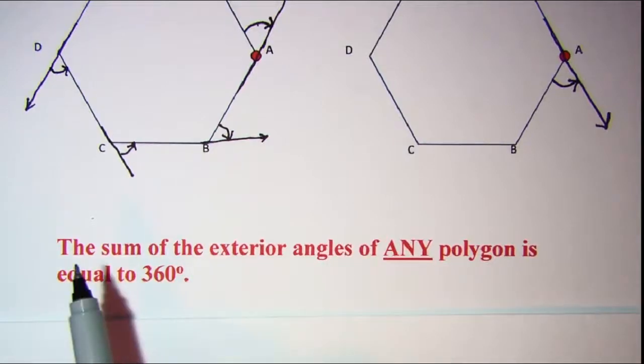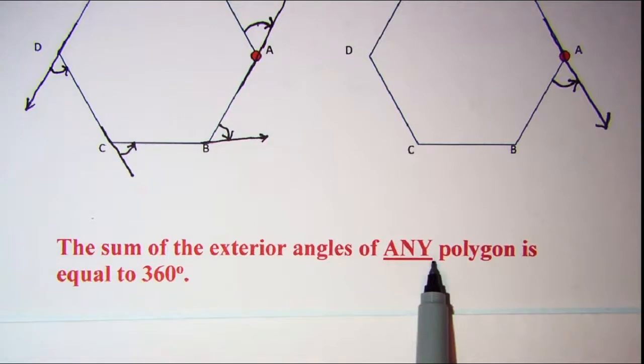We have a theorem then that says the sum of the exterior angles of any polygon is always equal to 360 degrees.